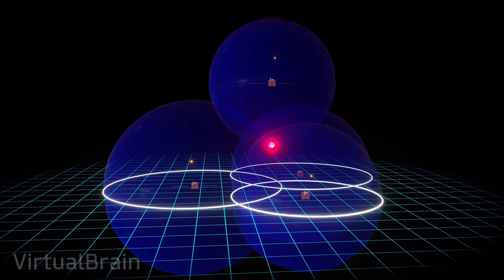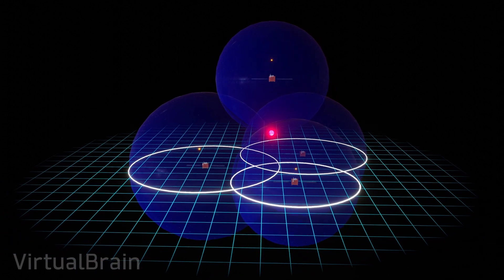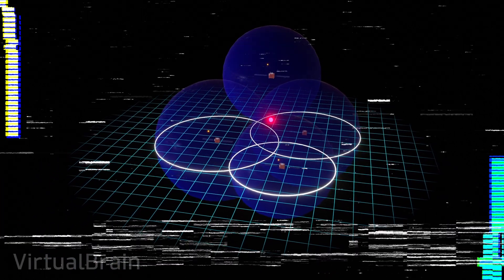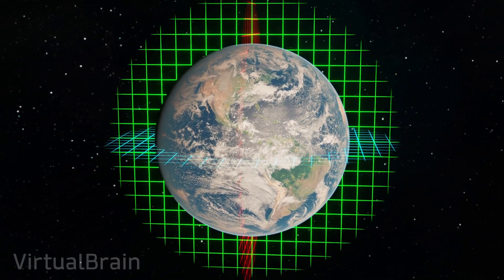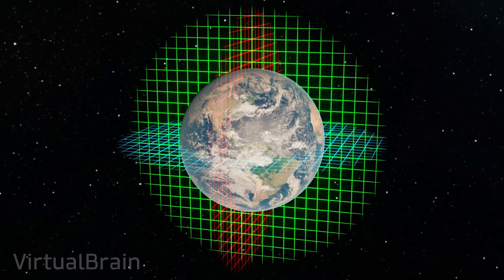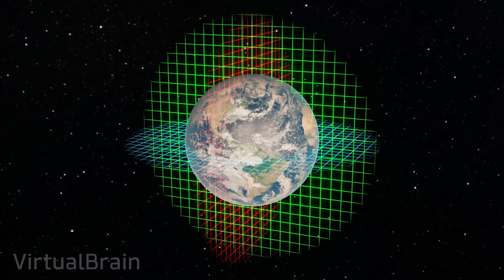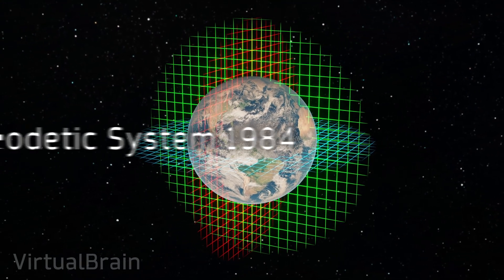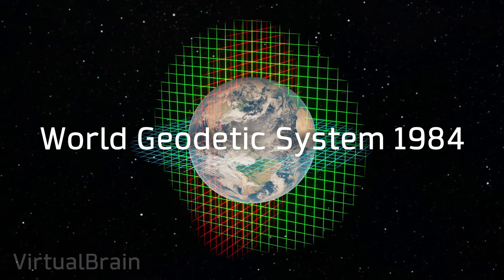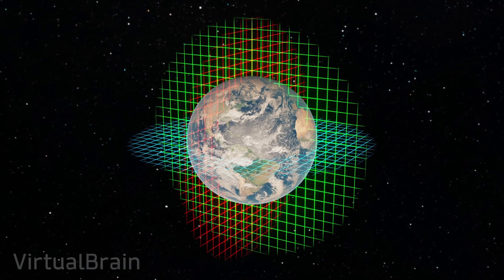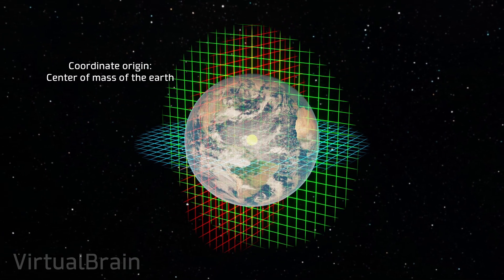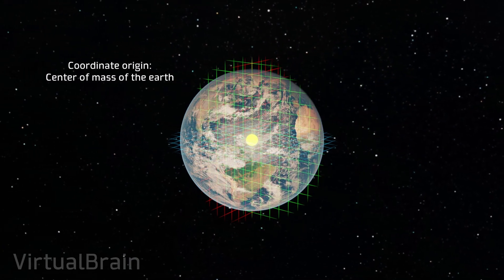Considering all this, only one detail is missing to bring this mathematical model to reality, a coordinate system that allows us to determine the location of any point on our planet. In particular, the system used by GPS is called World Geodetic System in 1984 or WGS-84 for short. In this system, the origin of the coordinate system, through which all axes will pass, corresponds to the center of mass of the Earth.